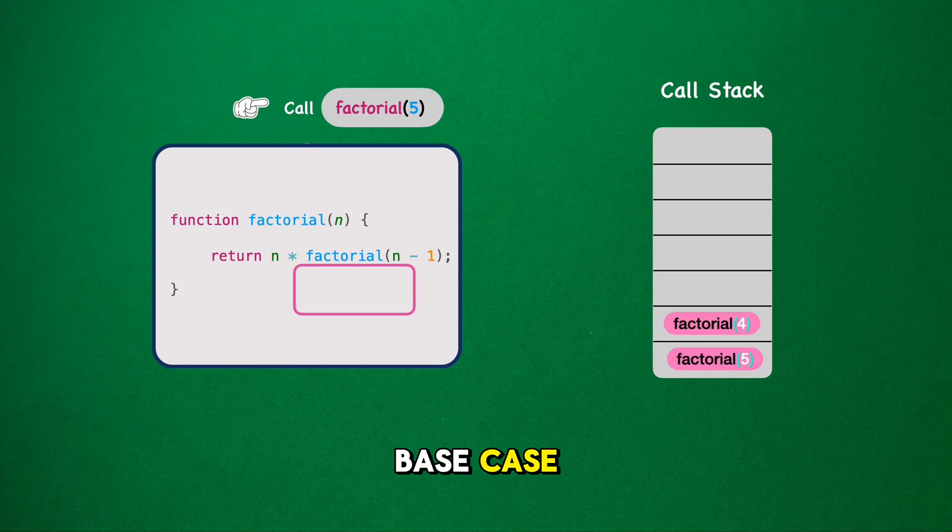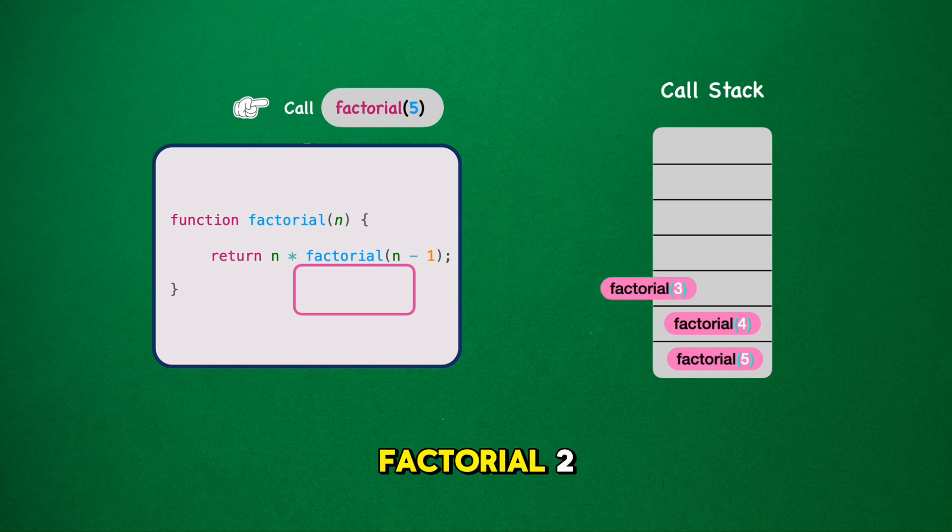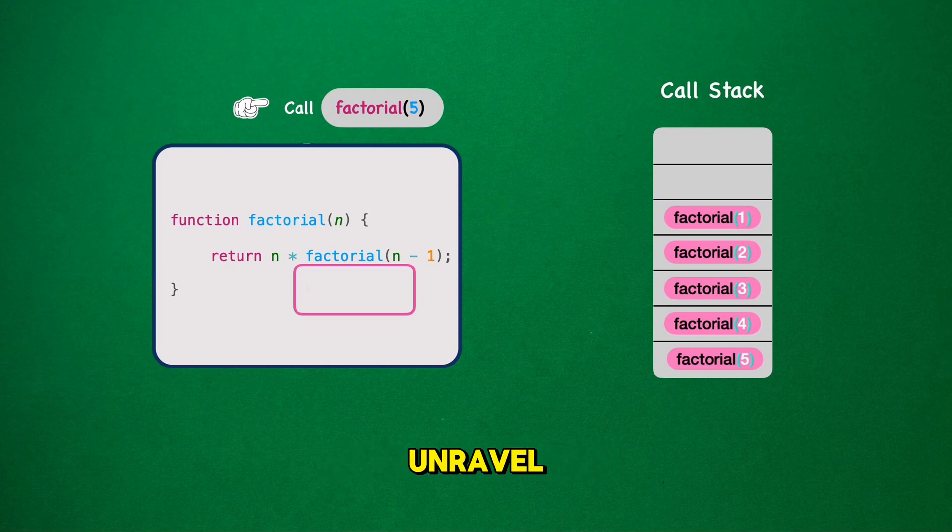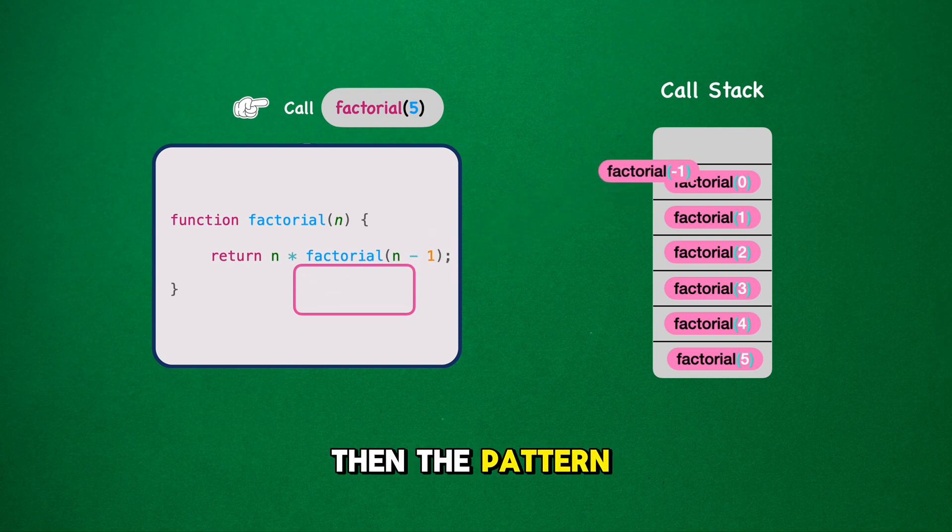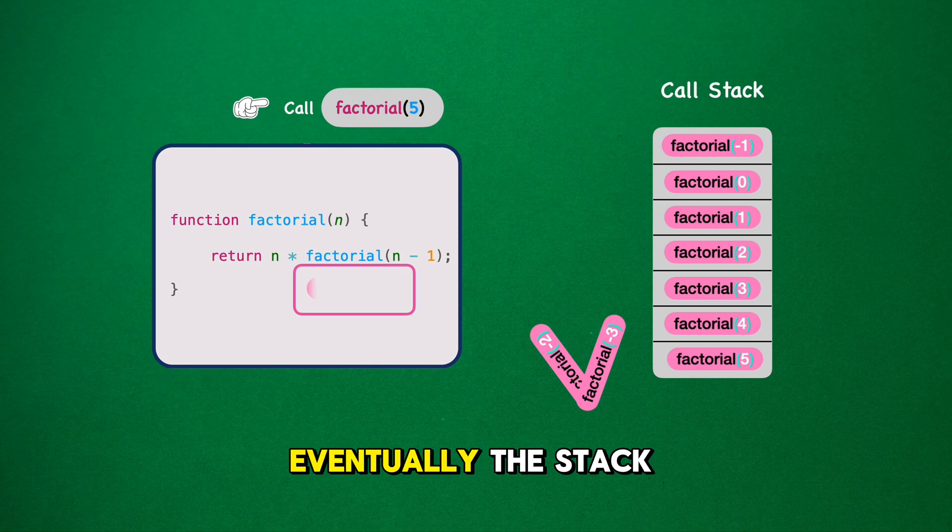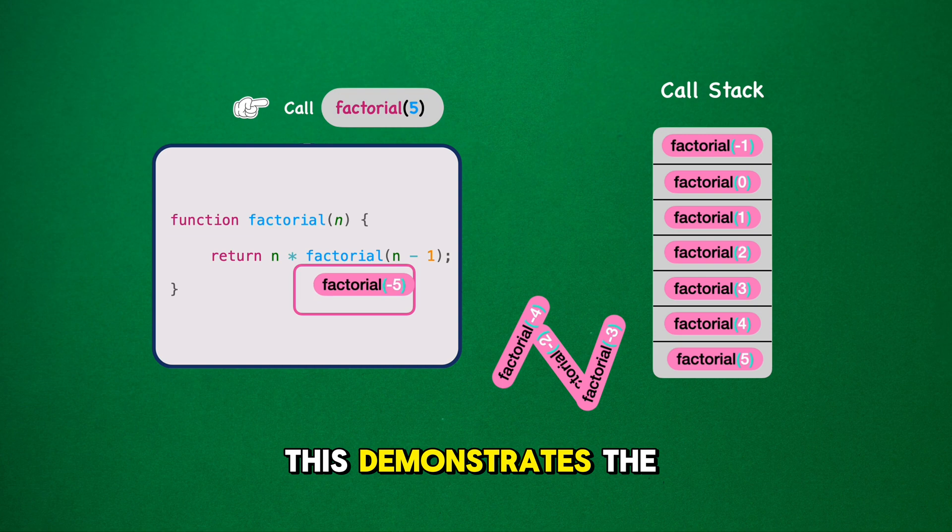But without a base case, factorial 4 then calls 4 asterisk factorial 3. And so it goes, factorial 2, factorial 1. Now here's where things go astray. Normally, factorial 1 would return 1, and the recursion would begin to unravel. Instead, missing the base case, we add factorial 0 to the stack. The pattern continues unchecked, goes factorial minus 1. Since the function never hits a base case, it will continue to call itself. Eventually, the stack reaches its limit, a situation known as stack overflow. This demonstrates the critical importance of a base case in recursive functions.